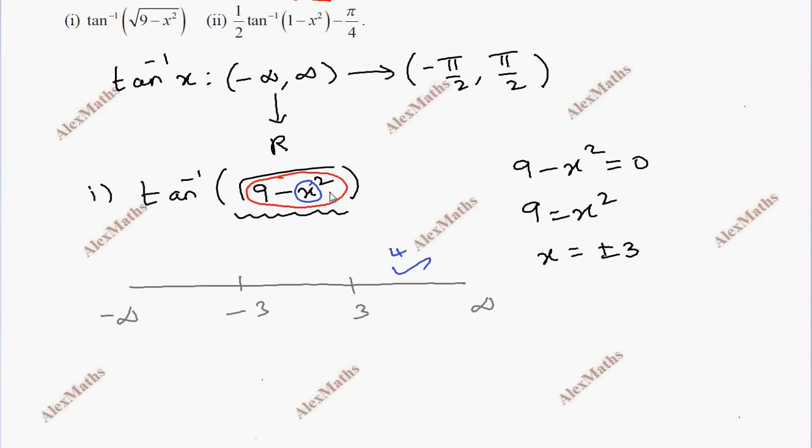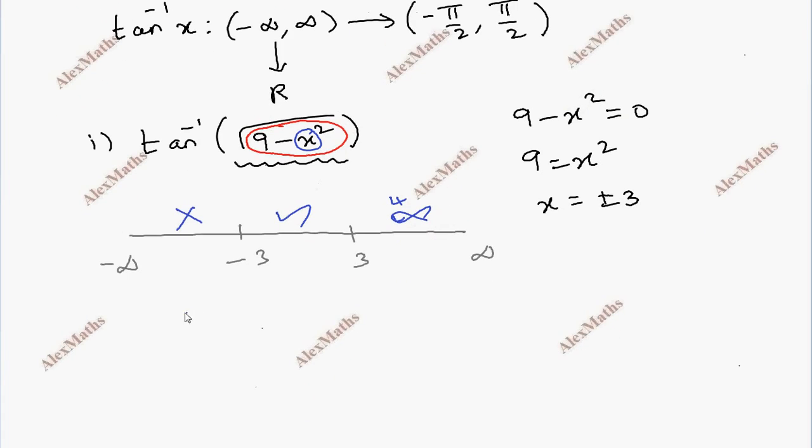The domain is minus 3 to plus 3. This is the domain for tan inverse root of 9 minus x square, the possible values for x, that is the expression domain.